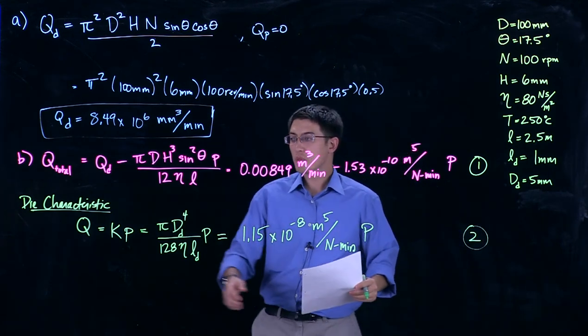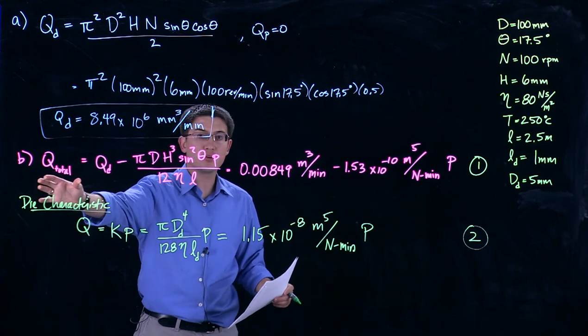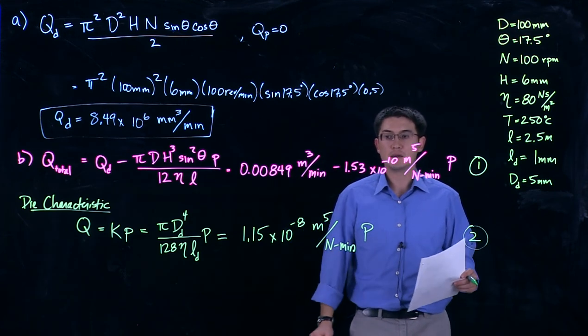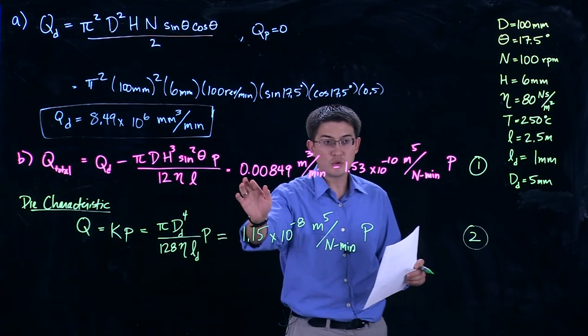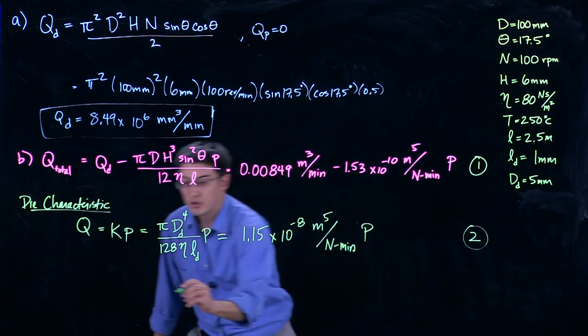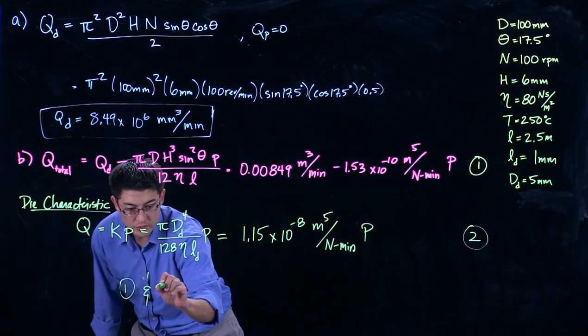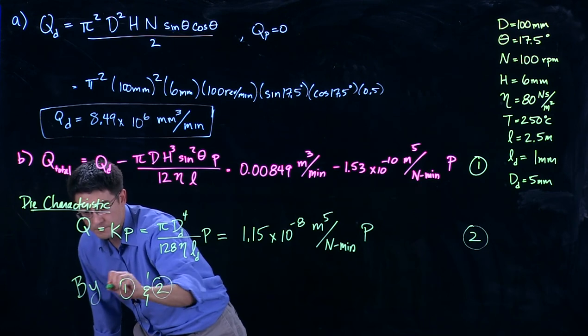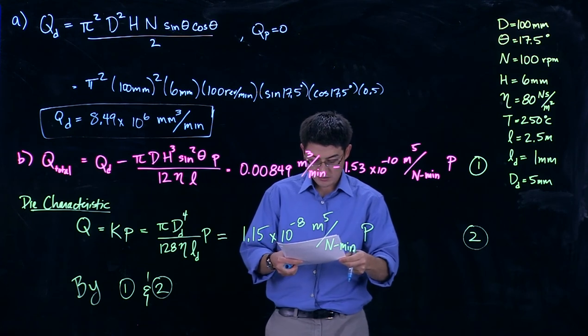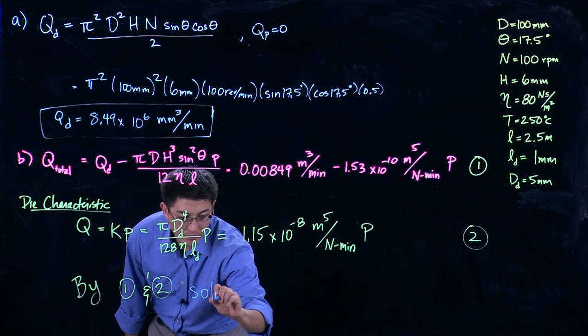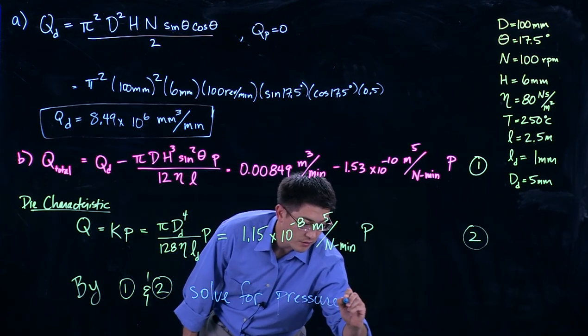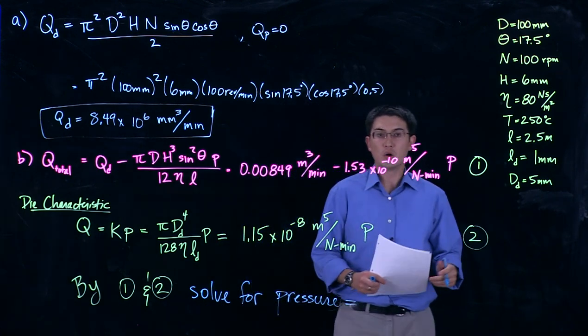Now, I know that whatever flows to the die has to be whatever is coming out of my extruder. It comes out of the extruder and right into the die. So I can set these two equations, one and equations two, equal to one another. So one and two, I can solve for the pressure. The only unknown here is pressure.